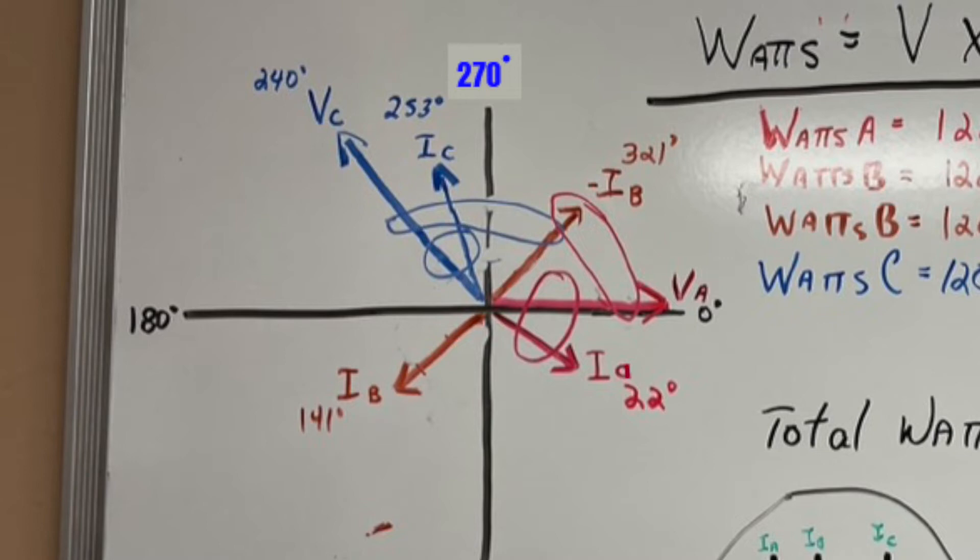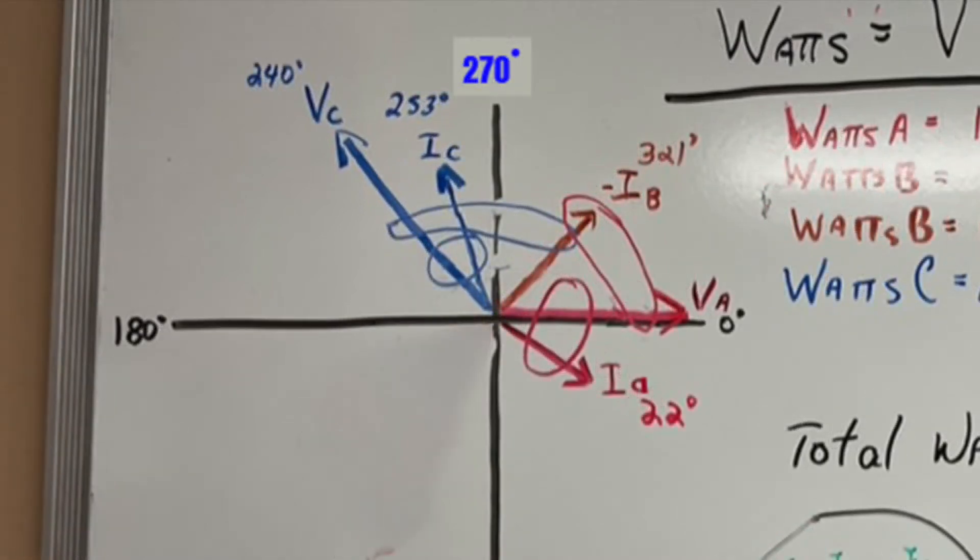So in the meter, if you remember, we have to reverse this current. It's reversed in the meter internally. So we're going to take this 140 degrees and flip it 180 degrees and it'll now become negative IB at 321 degrees.